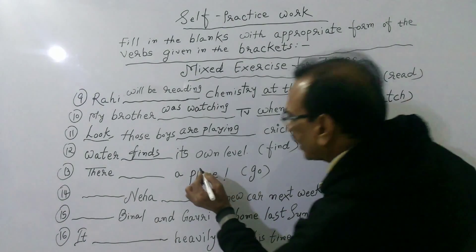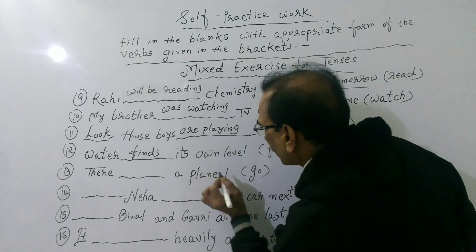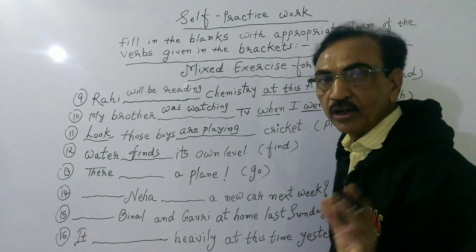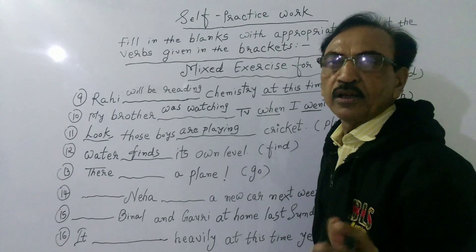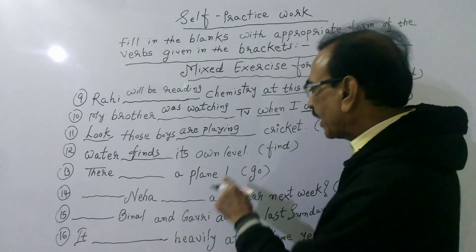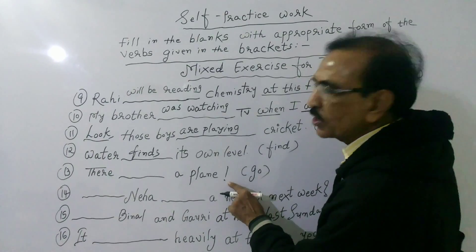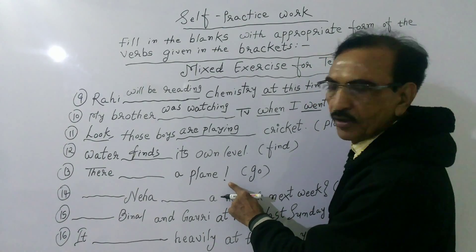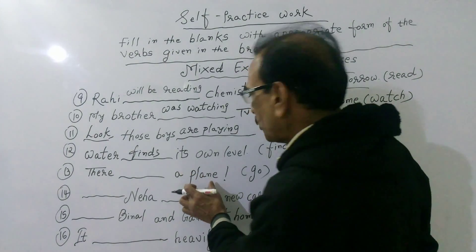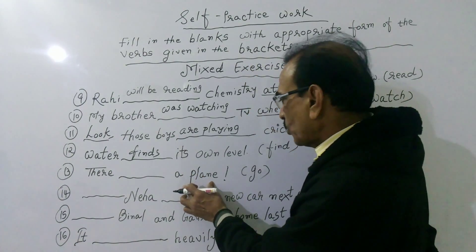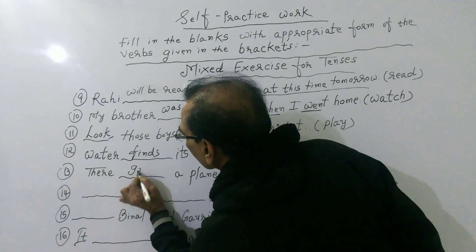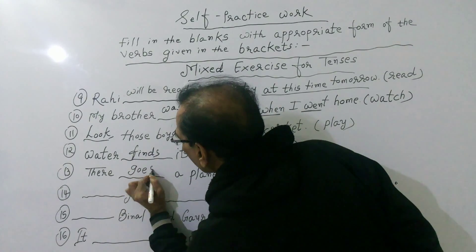Next sentence: There dash a plane! We have already learned this point — if a sentence begins with 'here' or 'there' and ends with an exclamation mark, it is simple present tense. 'Plane' is singular, so the correct answer is: There goes a plane!